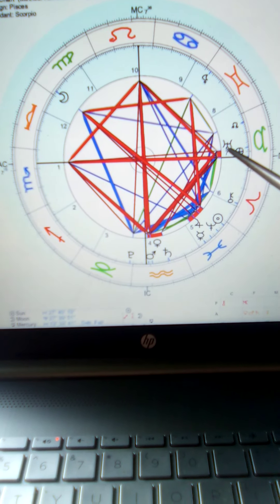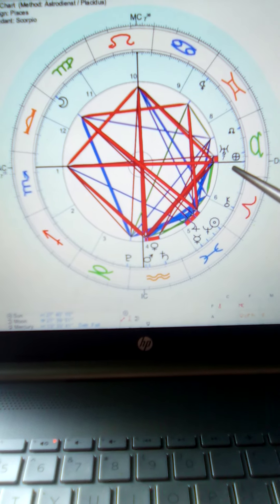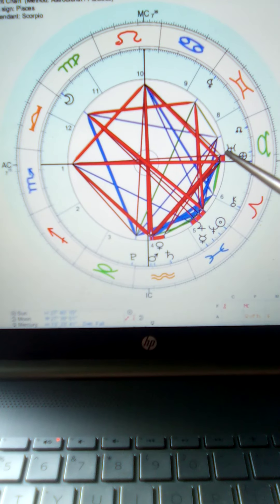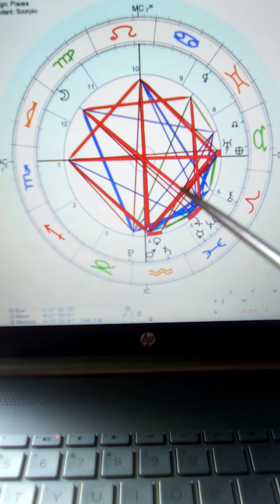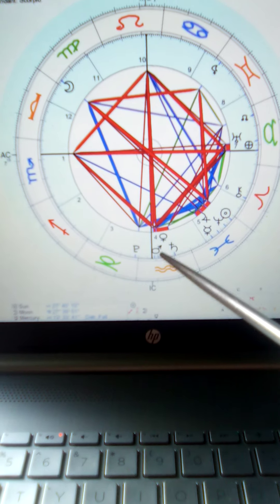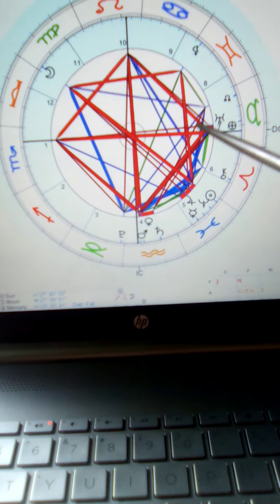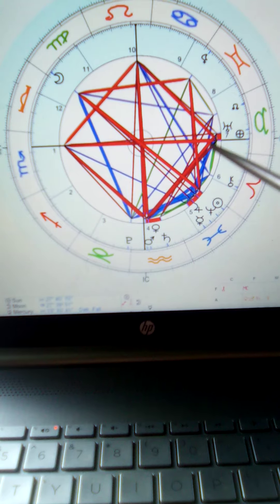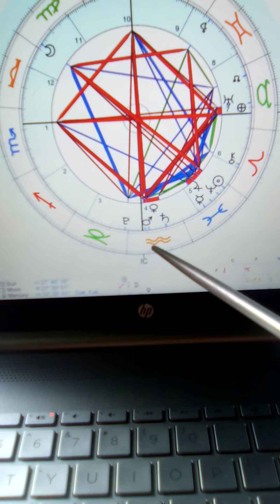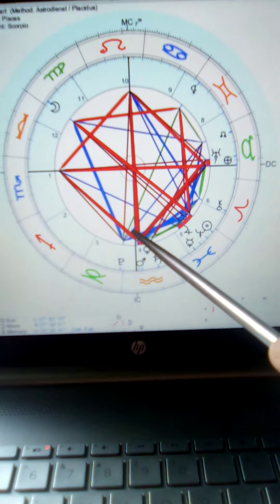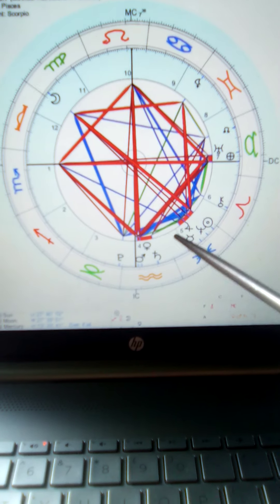Here you have Uranus. I've been talking about Uranus before because it stands for very sudden changes. Here we have this 90 degree angle, it's called a square, with Mars. So there's a Mars-Uranus square. That can mean an outbreak of sudden conflicts. We shouldn't be afraid of that. That happens all the time. I don't like it, but it seems not to be avoided.